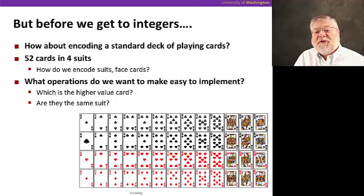We probably want to be able to tell if a card is higher than another, or if they're the same suit. That might help us think about the kind of encoding we have. Let's take a look at some examples.